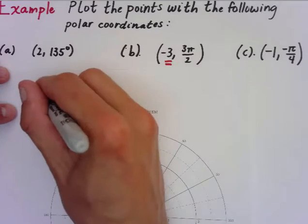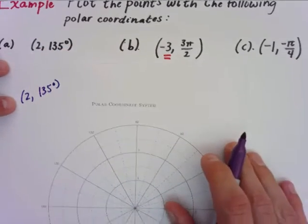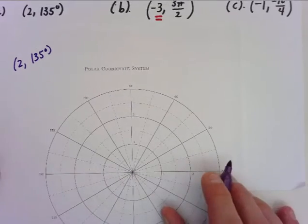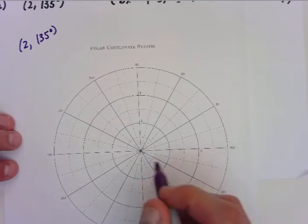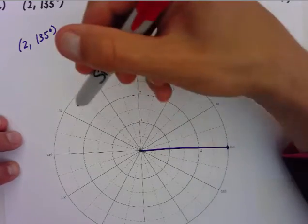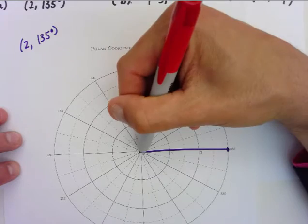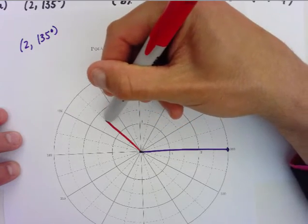We're going 2 and 135°. Remember that first number is the radius, the second number is degree. So I'm going to plot the angle first. I'm going to draw my purple line here, and I'm going to draw the terminal side of 135°. There's 120, here's 135. I'm going to just draw this all the way out.